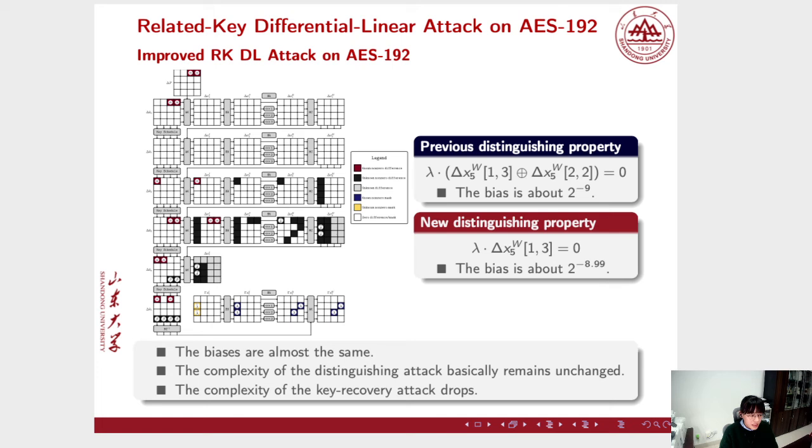However, we discover another non-trivial property in the DL distinguisher. This is the previously used distinguishing property and it relies on difference of two bytes, while the new property we found only requires one byte of difference. Note that the bias of these two properties are almost the same, so the complexity of the distinguishing attack with the new property basically remains unchanged. But the complexity of the key-recovery attack drops because less key-bits get involved in the key-recovery phase.